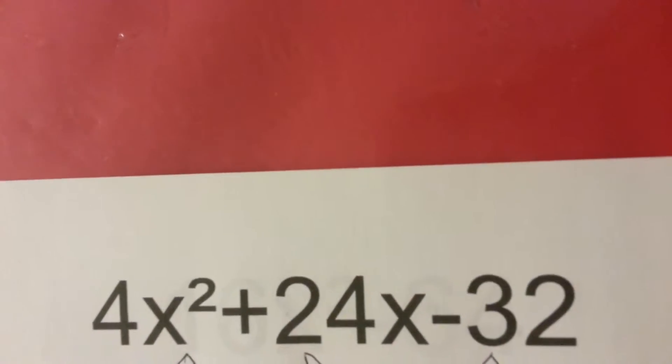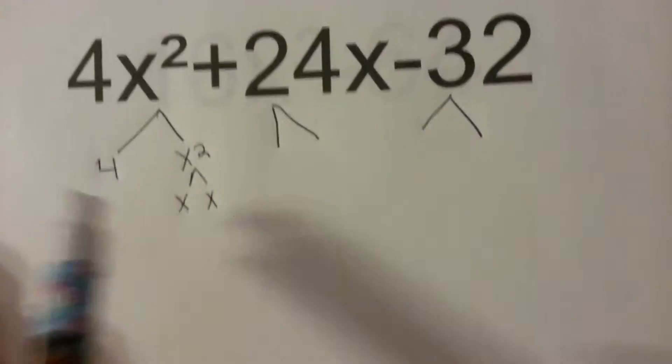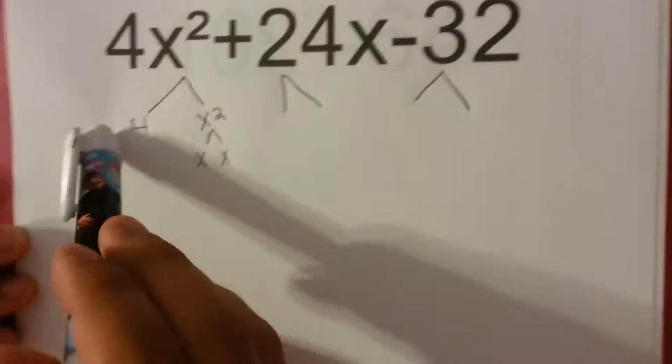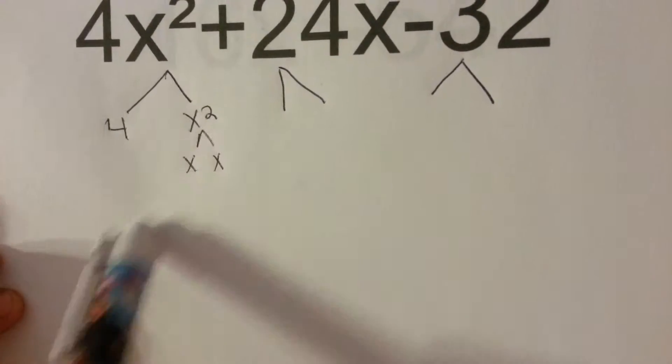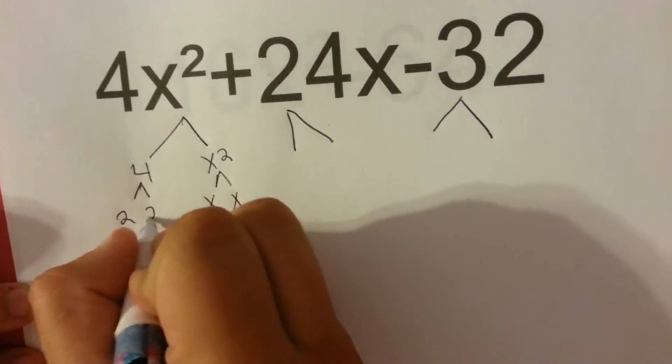This is the equation 4x squared plus 24x minus 32. I already started this one, and I broke down 4x squared into 4 and x squared, and then I broke down x squared into x and x, and I can break down 4 into 2 and 2.